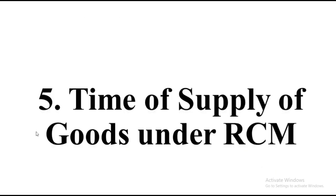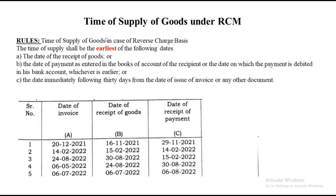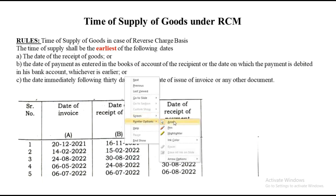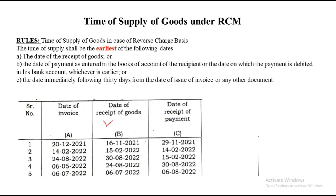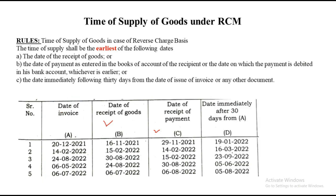Now the 5th type: time of supply of goods under RCM, also known as reverse charge mechanism. Under time of supply under RCM, the rule is it has to be the earliest of: date of receipt of goods, date of payment, and the date immediately following 30 days from the date of issue of invoice. We need exactly 30 days ahead of the invoice date, so we need to create one more column — 30 days from the invoice date. Once you get that column of 30 days, the rule is: date of receipt of goods, date of payment, and 30 days from the date of invoice — whichever is earlier will be your time of supply. So 20th December plus 30 days becomes 19th January 2022.